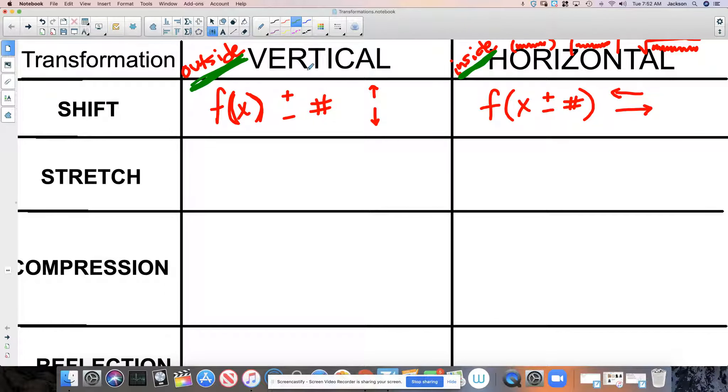Vertical transformations match up with the operation. So addition means moving up, which we would assume. Horizontal transformations are the opposite. So when we're adding, we're actually moving to the left.